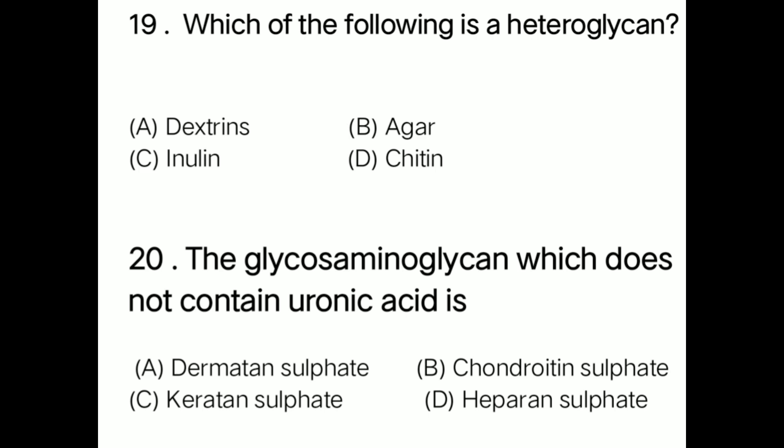Question: Which of the following is a heteroglycan? Option A dextrin, option B agar, option C inulin, option D chitin. Correct answer is option B: agar. Agar is also called a heteroglycan.